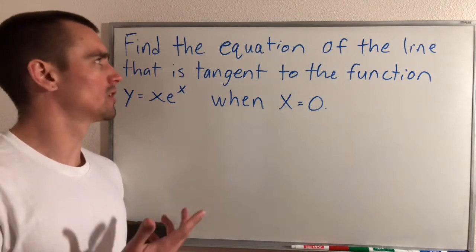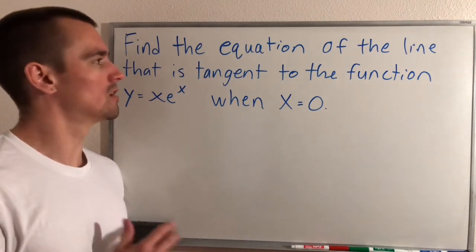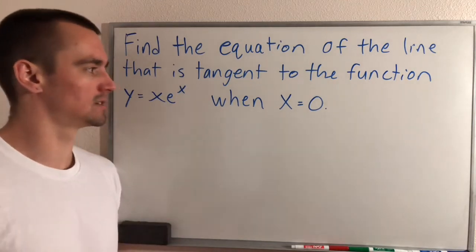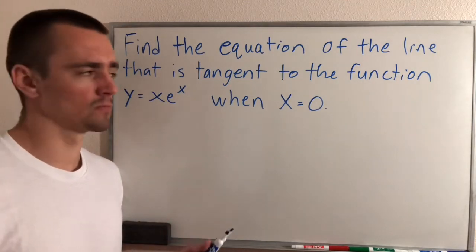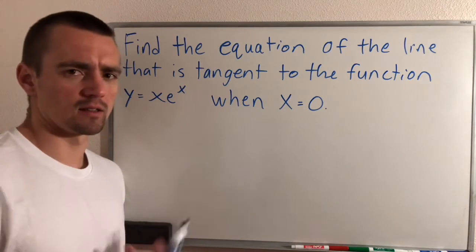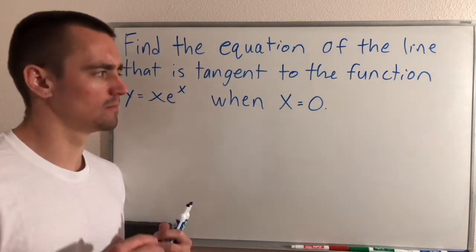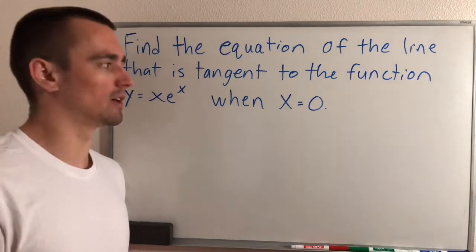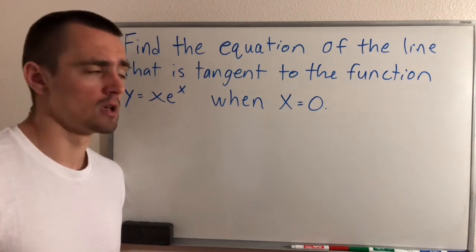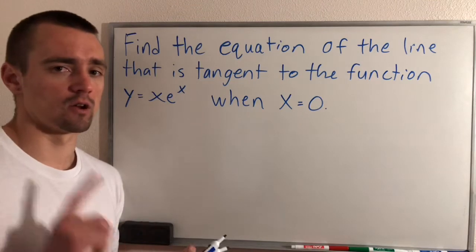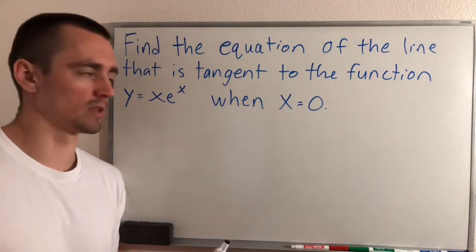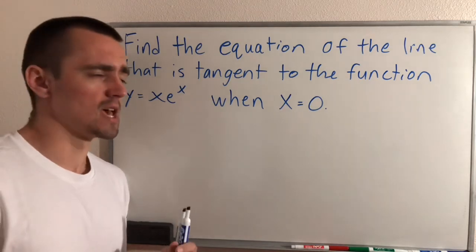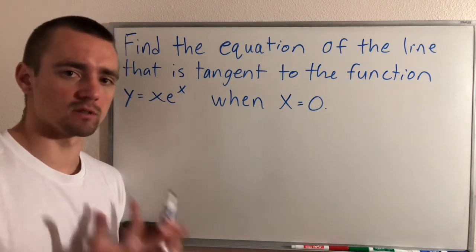So what we're going to do is find the equation of the line that is tangent to the function y equals x times e to the x, when x equals 0. When we're trying to find the equation of a tangent line to a given function at a specific point, we need to make sure that it intersects with that point — both the tangent line and the function share that point — and we also need to make sure that they have the same slope at that point.